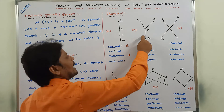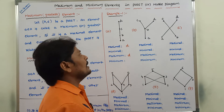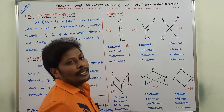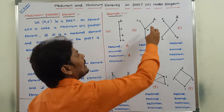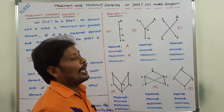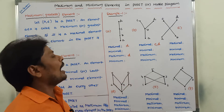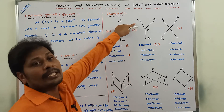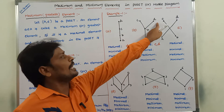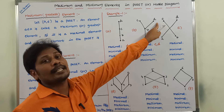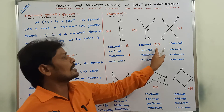Now consider the second diagram. In this diagram, what are the maximal elements? Here, C is not related with B, D is not related with B, C is not related with A, and D is not related with A. Hence, we can say that maximal elements are C and D. We can also say that element C does not have any immediate successor in the upward direction, and element D does not have any immediate successor in the upward direction. So the maximal elements are C and D.